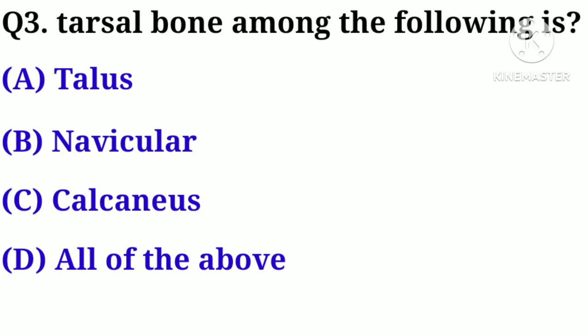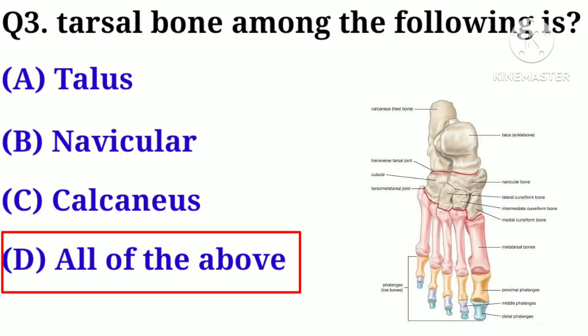Q3. Tarsal bones among the following: A. Talus, B. Navicular, C. Calcaneus, D. All of the above. Answer: D. All of the above.